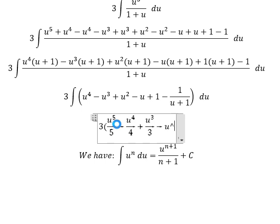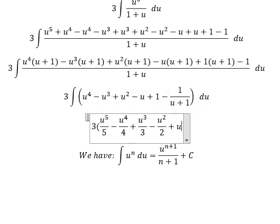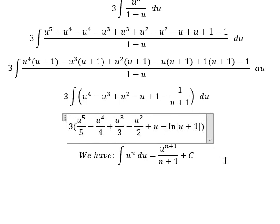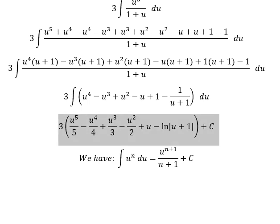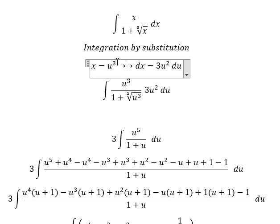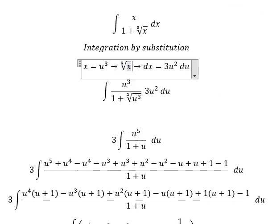The next one is about number two, then we have u, and the last one is ln of the absolute value of u plus one, and I will add the constant c. Now u is the cube root, so we put the cube root back in for both sides, and we have the final answer.